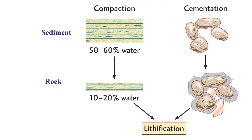Cementation is the gluing of sediment grains together. The glue, or cement, consists of minerals that form and grow between the grains, filling in the spaces between the particles and turning loose sediment into solid rock. What causes cementation? Fluids moving between the grains may experience a change in temperature or pressure, resulting in a chemical reaction that allows a mineral to grow. Chemical reactions caused by microscopic organisms can also create cements. It's not uncommon to find a variety of minerals in the spaces between the grains of a sedimentary rock.